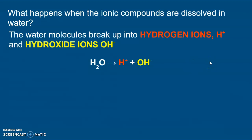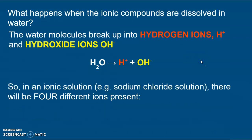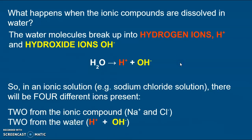If you do IB chemistry you would do that in the final term before the exams so it shows you just how complicated the actual picture is. So if I take sodium chloride as my example then there are four different ions actually floating around in the solution. There are two from the sodium chloride Na+ and Cl- and there are two from the water H+ and OH-.